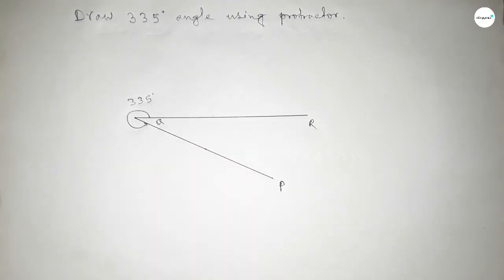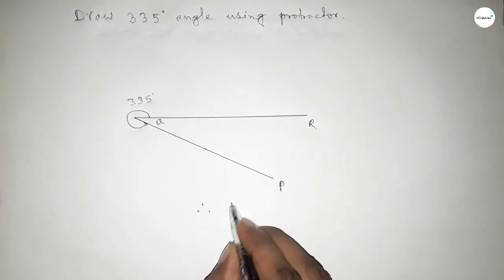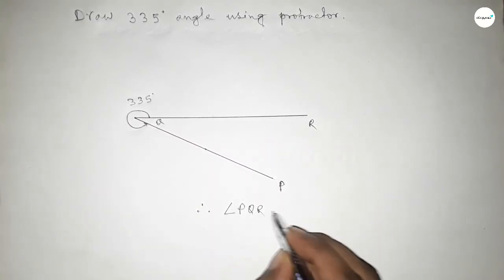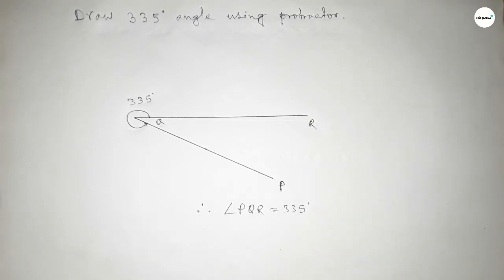Therefore, angle PQR equals 335 degrees. That's all. Thanks for watching! If this video is helpful to you, please share it with your friends. Thanks for watching.